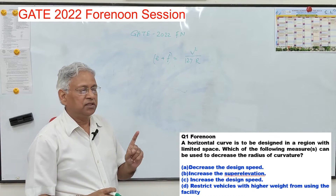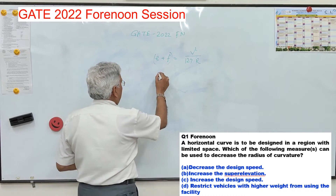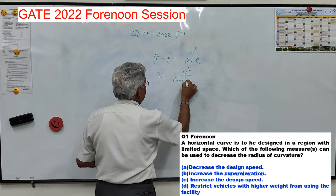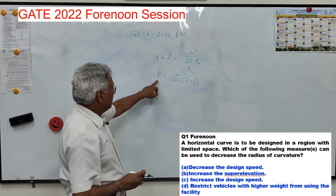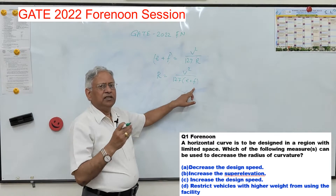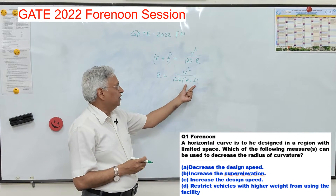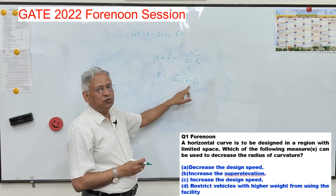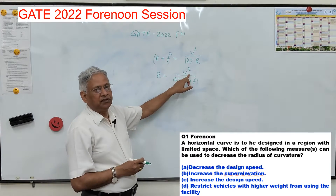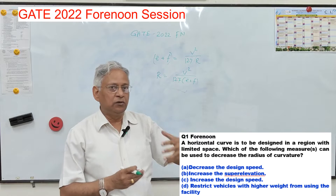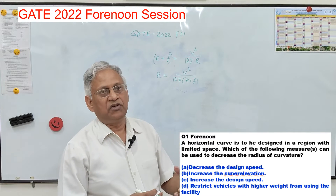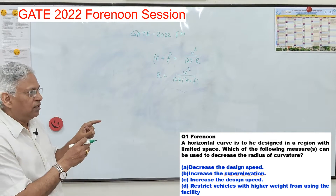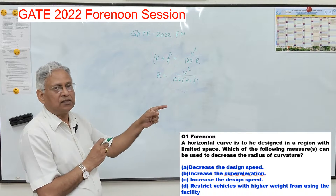The question is to reduce the radius of curvature R. So R equals V squared upon 127 times (E plus F). This can be reduced by increasing E or F, but their effect is very small. The total permissible value of E plus F is 0.07 plus 0.15, that is 0.22. Since R depends upon speed, to reduce the radius we should decrease the speed.